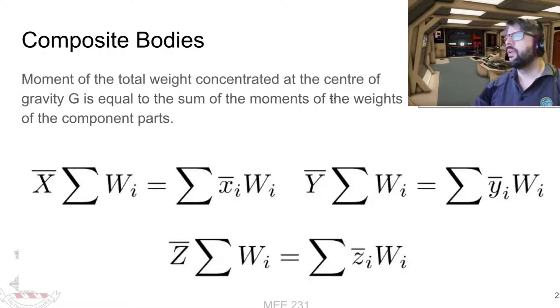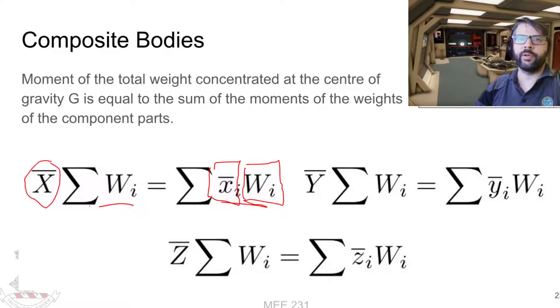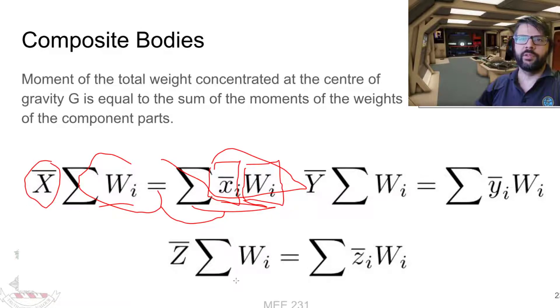We can do composite bodies too, so this works exactly the same way as finding the centroid of a planar surface or the center of gravity for a plate. We're just taking the moment of the total weight concentrated at the center of each of those components, crossing it with the offset distance, adding all that up, and then dividing by the total weight will give you your x bar.